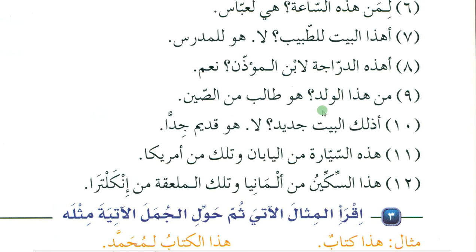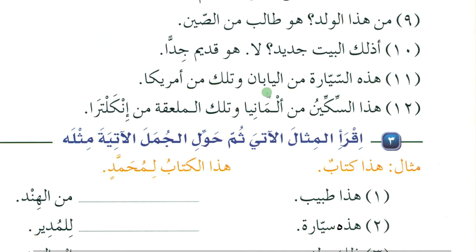Liman hazihi as-saaa — 'to whom does this watch belong?' Hiya li-Abbas — 'it belongs to Abbas'. Haza al-baytu lil-tabib — 'does this house belong to the doctor?' La, huwa lil-mudarris — 'no, it belongs to the teacher'. Hazihi ad-darrajatu libni al-muazzin — 'does this bicycle belong to the son of the muazzin?' Yes. Man haza al-walad — 'who is this boy?' Huwa talibun minas-sin — 'he is a student from China'. Zalika al-baytu jadid — 'is that house new?' La, huwa qadimun jiddan — 'no, it is very old'. Hazihi as-sayyaratu minal-yaban wa tilka min Amrika — 'this car is from Japan and that is from America'. Haza as-sikkinu min Almanya wa tilka al-qalamu min Inklitara — 'this knife is from Germany and that pen is from England'.